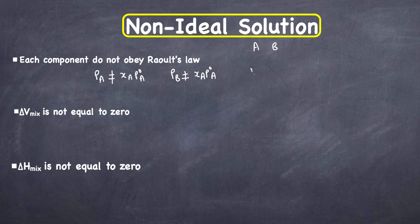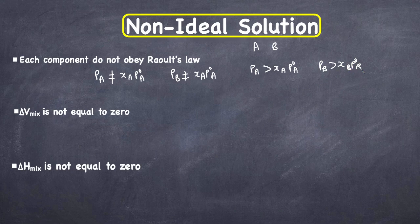The first type is when P_A or P_B is greater than what is expected — that is, P_A > X_A·P°_A or P_B > X_B·P°_B. These types of non-ideal solutions show positive deviation from Raoult's law.